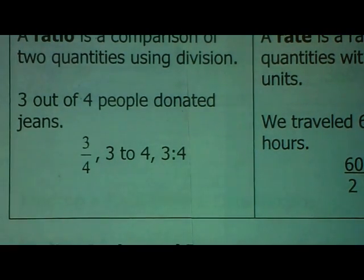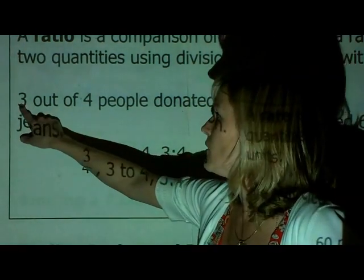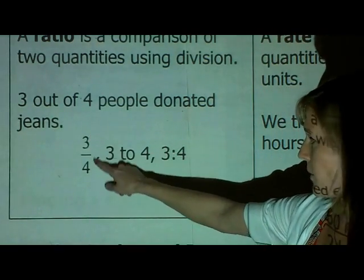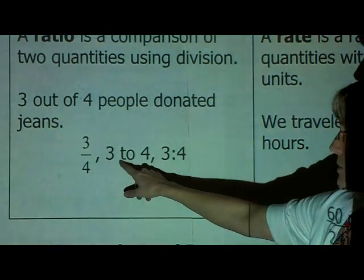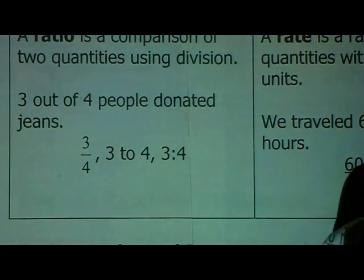Three out of four people is the comparison. We're comparing three and four. So, you can write that as a fraction, three over four. You can also write it as three to four or three colon four.